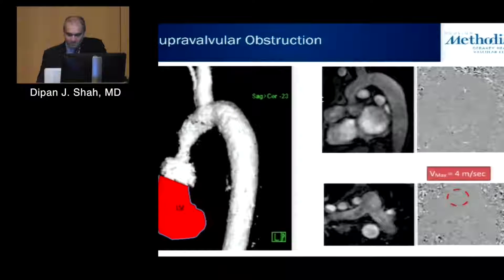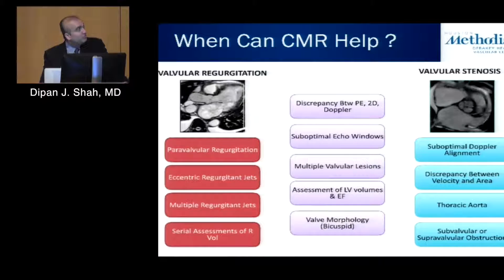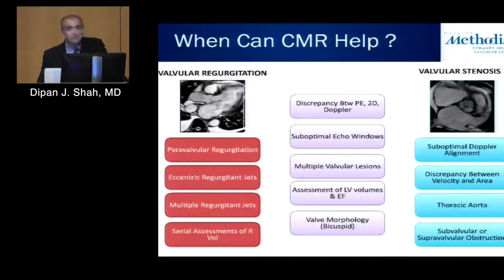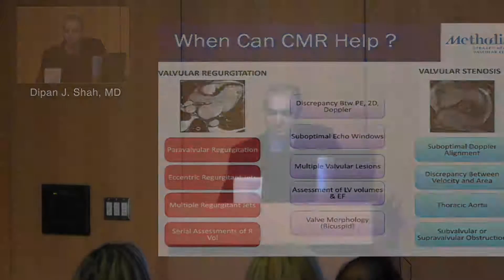In summary, CMR is potentially useful in valvular regurgitation when you have eccentric jets, multiple jets, when you want serial assessments of regurgitant volume, or in paravalvular regurgitation. For valvular stenosis, CMR is helpful when there's suboptimal Doppler alignment, discrepancy between velocity and effective orifice area, need to assess the thoracic aorta, or concern about subvalvular or supravalvular obstruction. In both regurgitant and stenotic lesions, CMR adds value for valve morphology, ventricular volumes, suboptimal echo windows, and discrepancy with physical exam findings. Thank you for your attention.